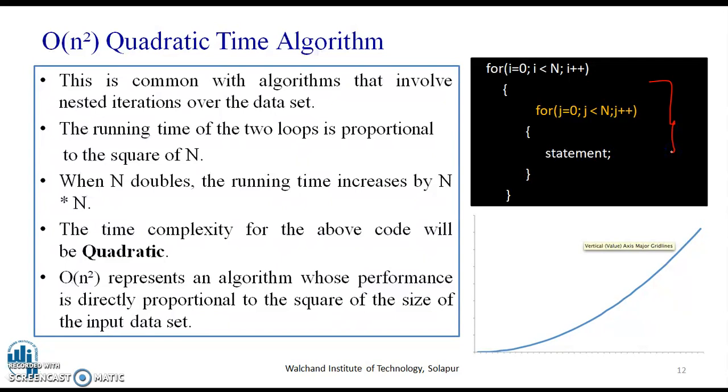A quadratic growth rate is one that can be described by a parabola. As shown, O(n²) represents an algorithm whose performance is directly proportional to the square of the size of the input data set. Here, when n doubles, the running time increases by n times n. So, if we can see over here, this is first loop, this is second loop. So, the running time over here is n² and the graph of quadratic runtime would look like this.